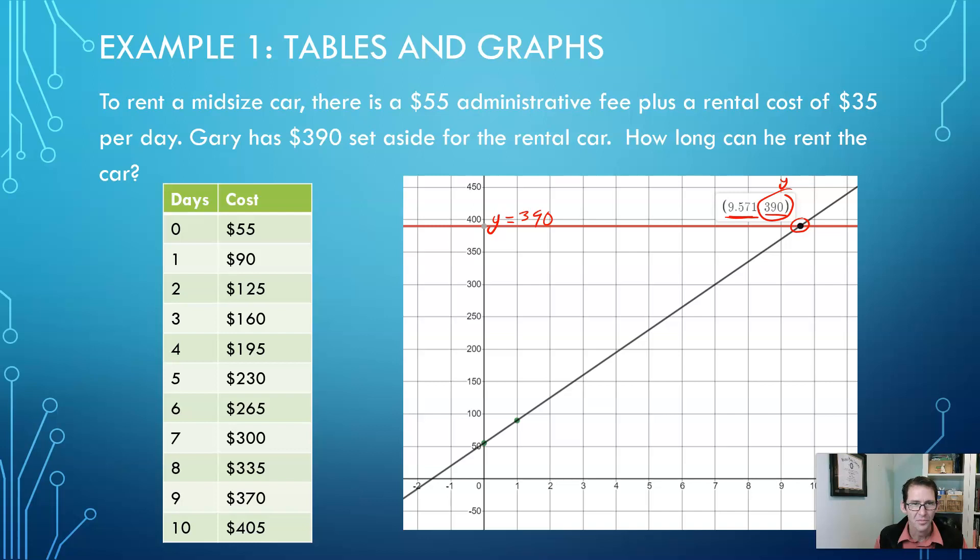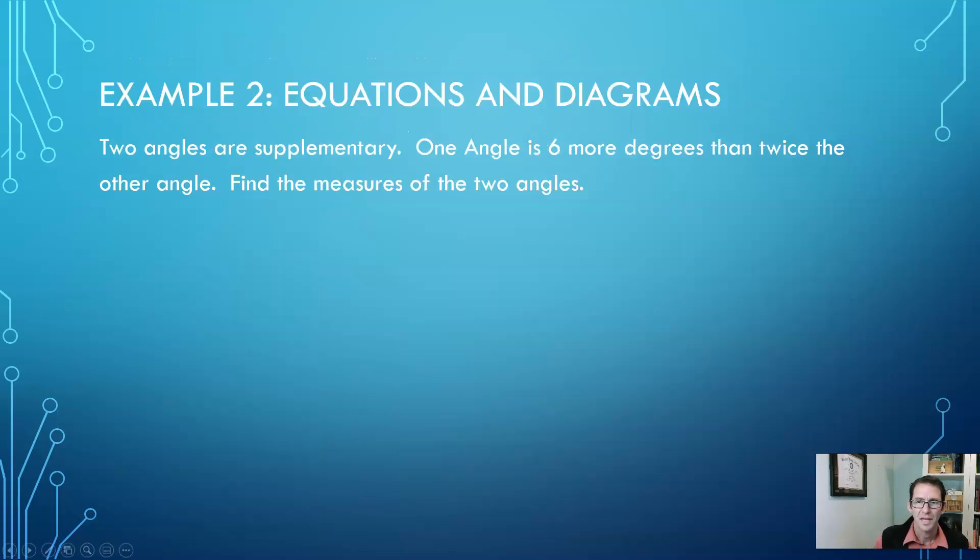Now let's do an example where we're working with equations and diagrams, and this diagram is going to motivate the equation. So here we've got two angles that are supplementary, and one angle is six more degrees than twice the other angle. We want to find the measure of the two angles. So it would help if I got a visual in mind of what two supplementary angles would look like. Now remember, supplementary angles mean they add to 180 degrees. So I'm going to call the one known angle x and the other one is six degrees more than twice that, so I'll call the other one 2x plus six.